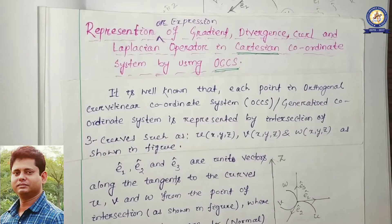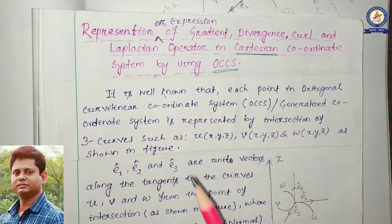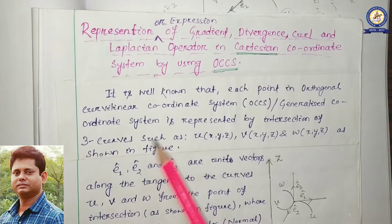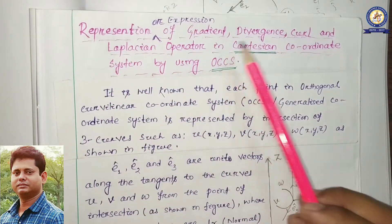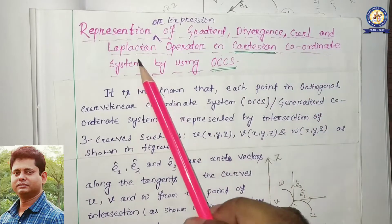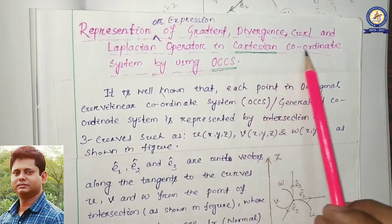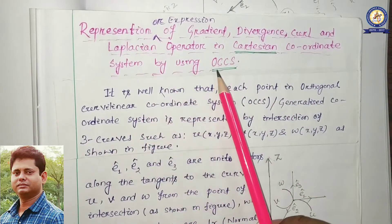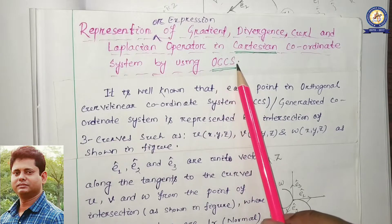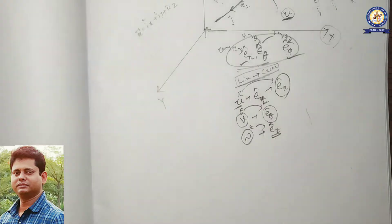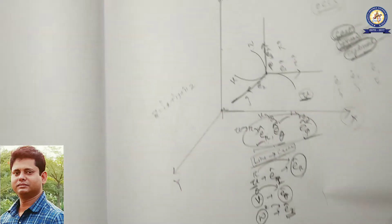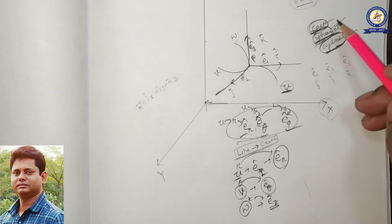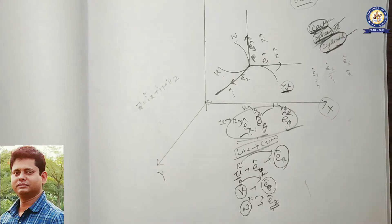Good morning to all of you. In this class we are going to discuss about the representation or expression of gradient, divergence, curl, and Laplacian operator in the Cartesian coordinate system by using the orthogonal curvilinear coordinate system. In our last class we discussed how the curvilinear coordinate system is very much essential to represent Cartesian, spherical, and cylindrical coordinate systems.